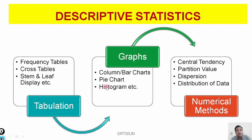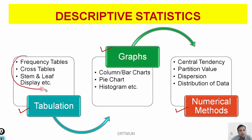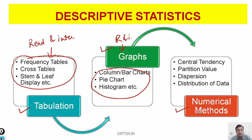In descriptive statistics, there are three different methods. First, we go for tabulation — tabular methods applied on our data. Then we go for graphs — graphical methods. Finally, we go for numerical methods. In the previous week, we saw how to construct tables and graphs. In this lecture, we will deal with how to read and interpret these tables. In the next lecture, we will go for reading and interpretation of graphs, and then we will cover numerical methods.